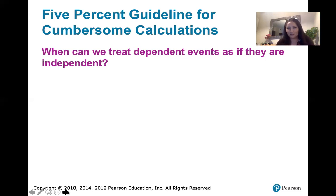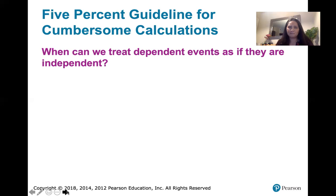We're trying to get around that detail in calculating probabilities when the events are dependent by asking: are there some circumstances when we can act as if they're independent — when the values we get will work just fine, even if we treat the events as independent when they're not? Well, there are some circumstances when we can do that.